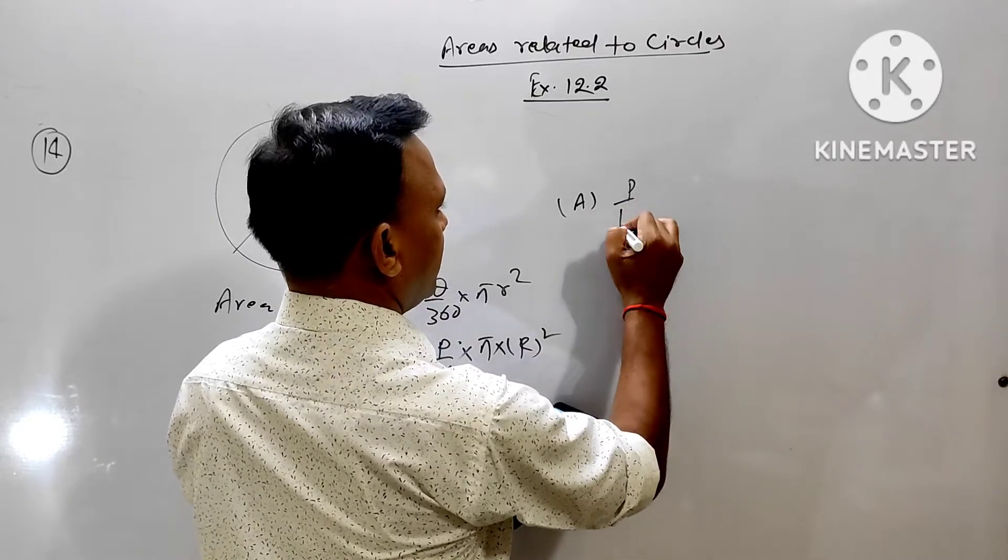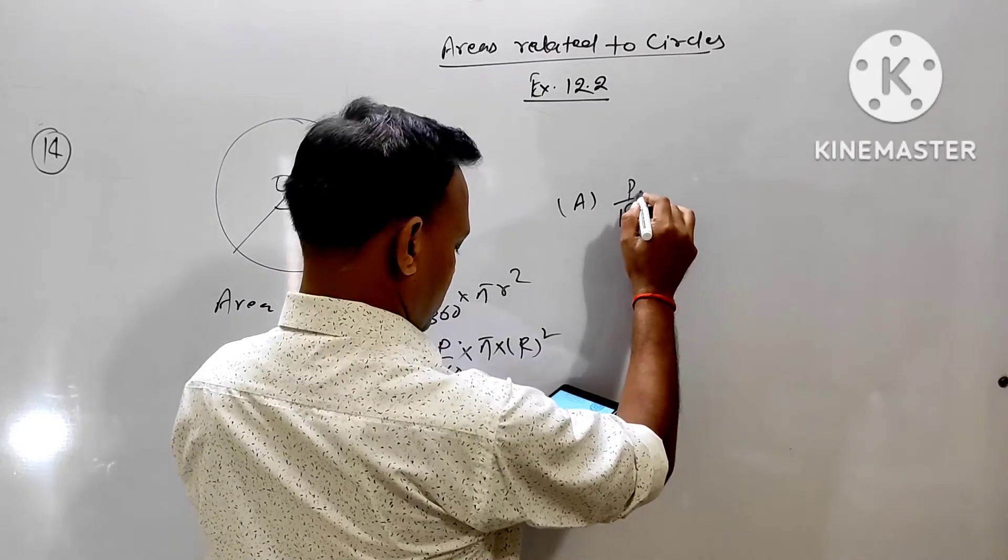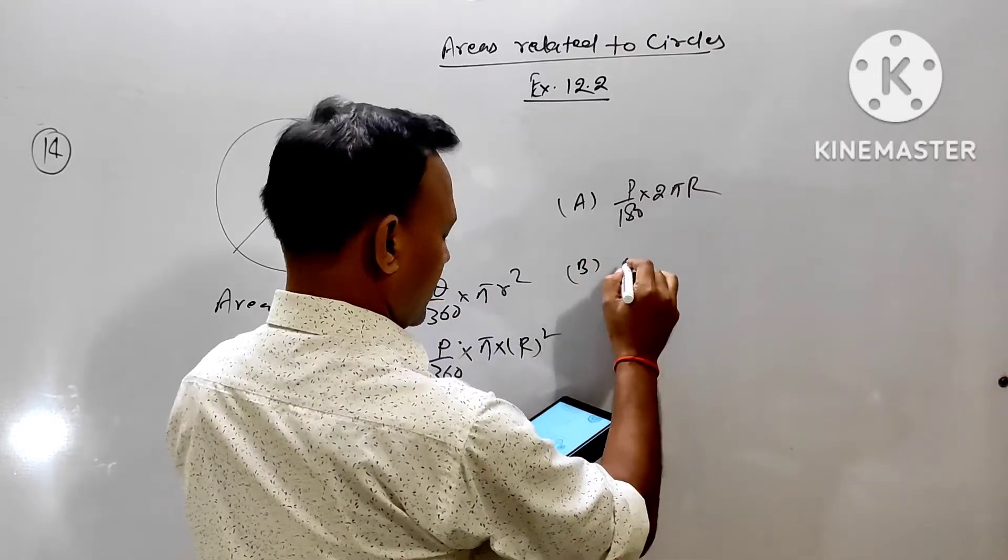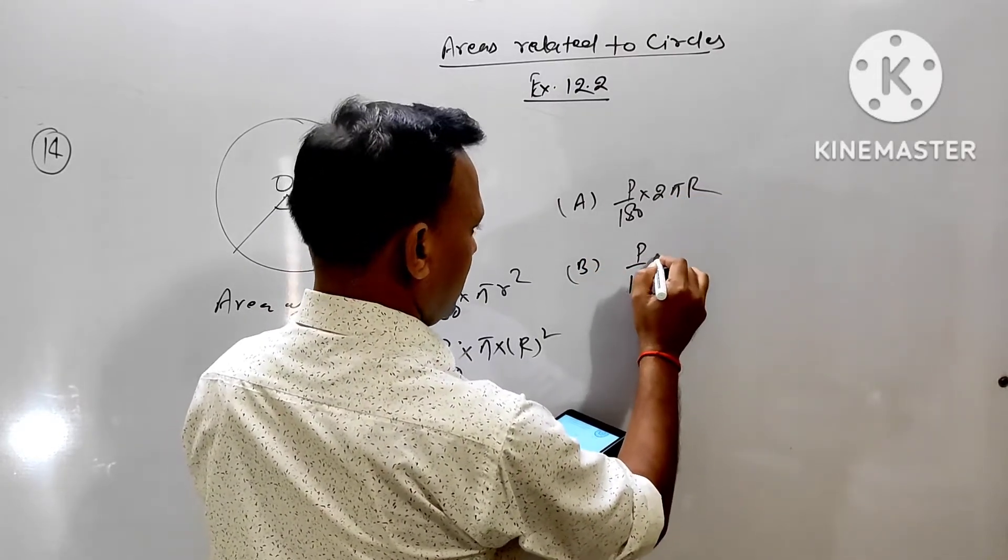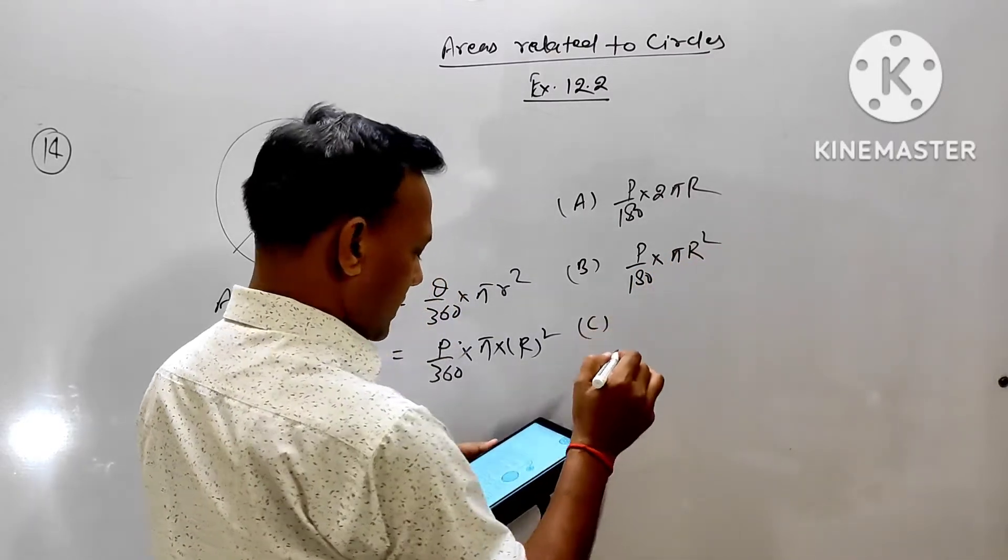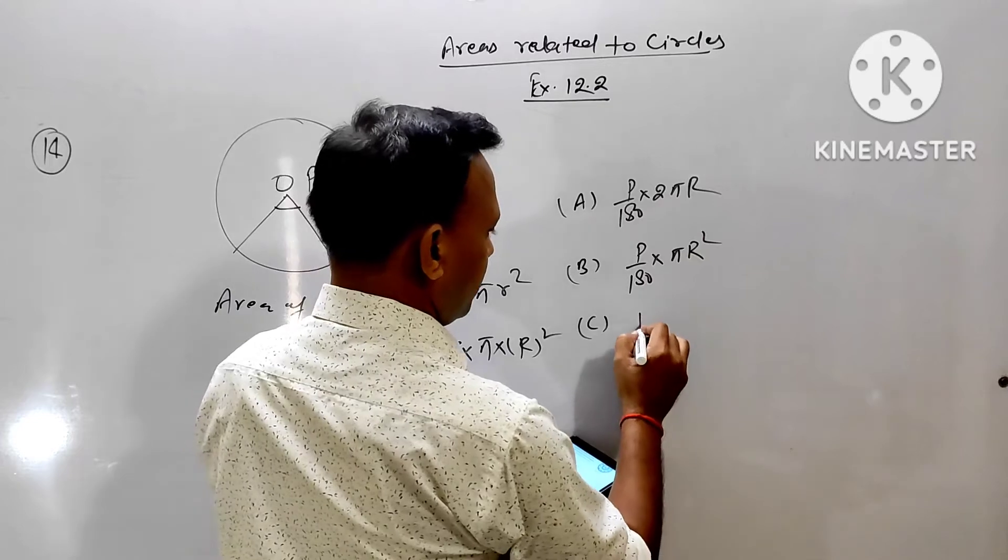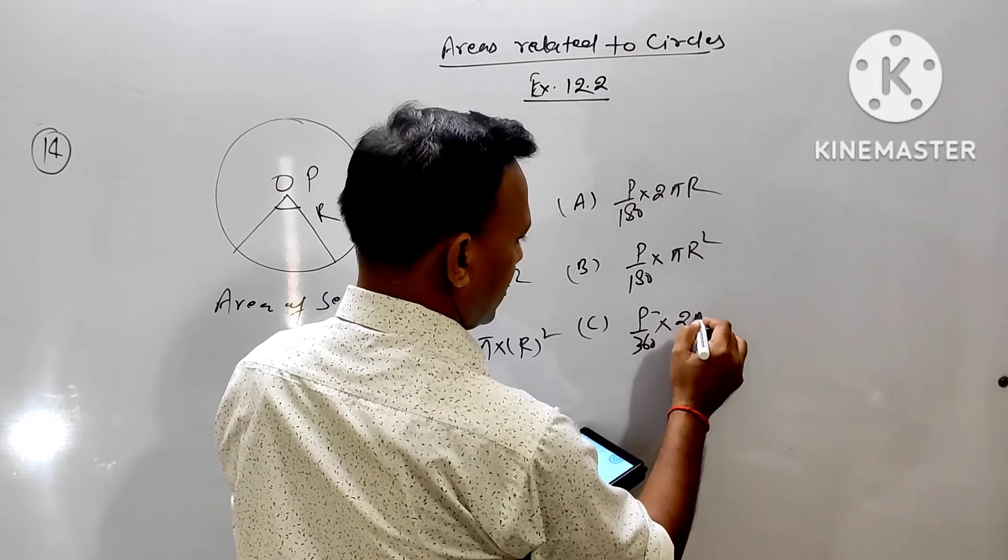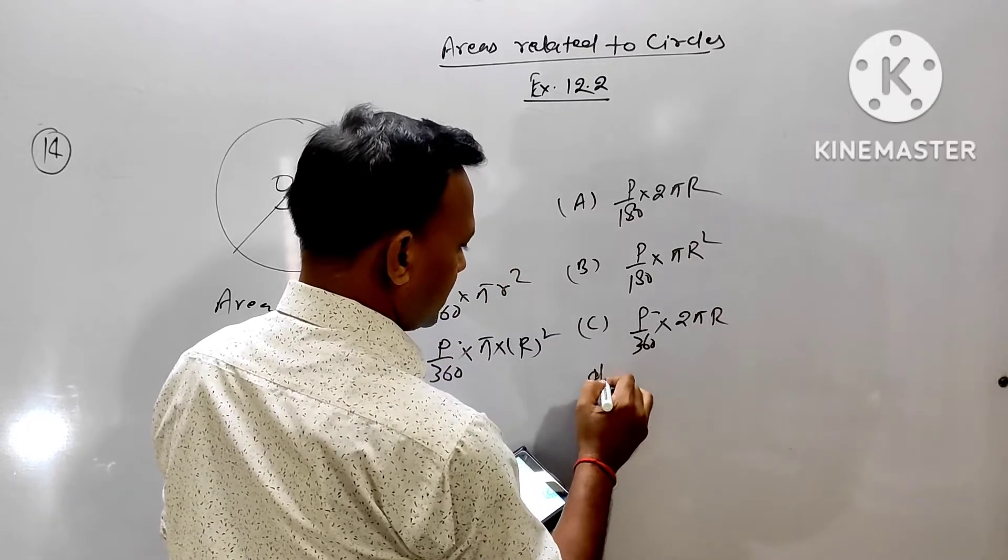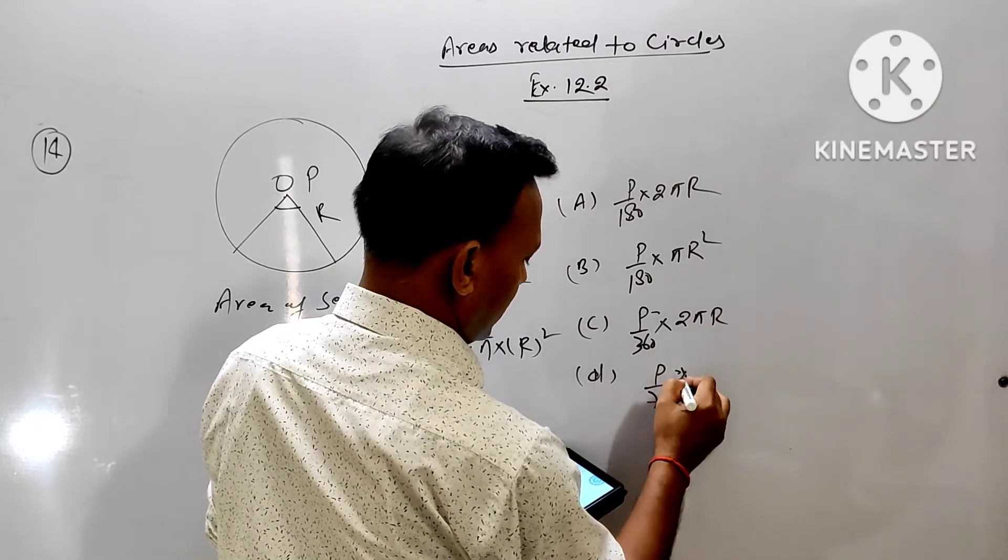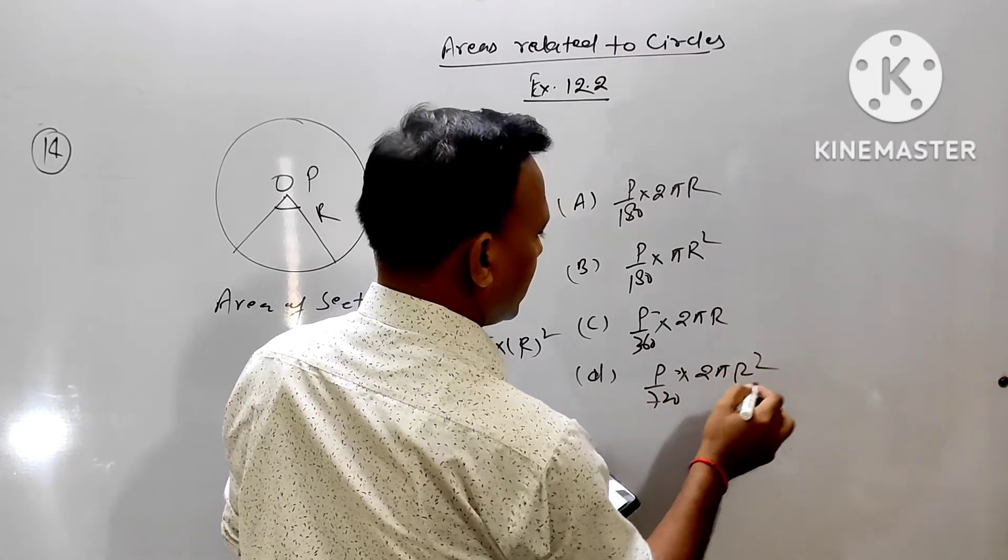Option A: P upon 180 into 2 pi r. Option B: P upon 180 into pi r square. Option C: P upon 360 into 2 pi r. And option D: P upon 720 into 2 pi r square.